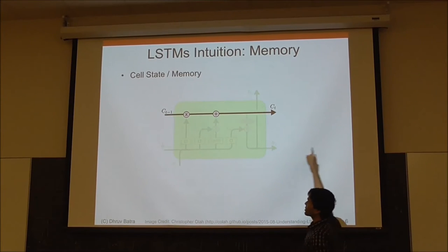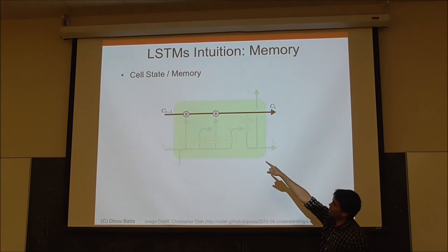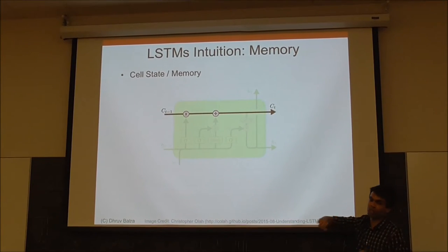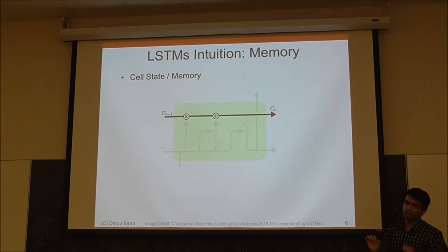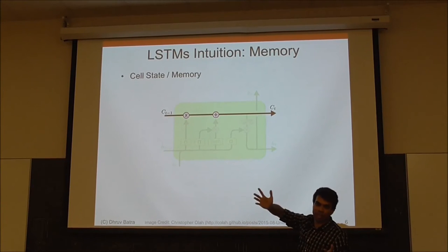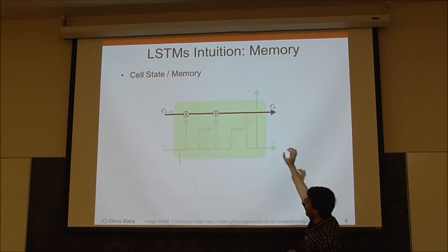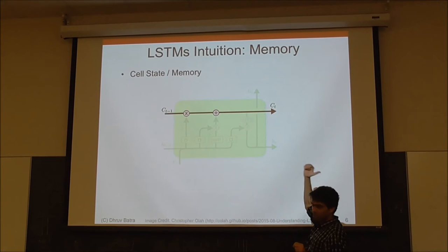It passes through and has some modifications that happen to it. That cross indicates that there's an element-wise product happening to it, and the sum indicates that there's element-wise addition happening to it. The element-wise product is happening through something called the forget gate, and the element-wise addition is happening through the input gate. Those are the only two manipulations; there's only two ways of manipulating this hidden memory, otherwise it passes straight through.